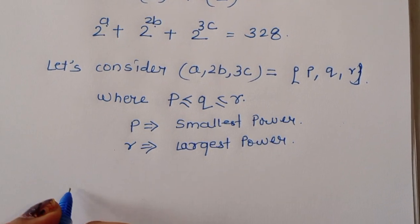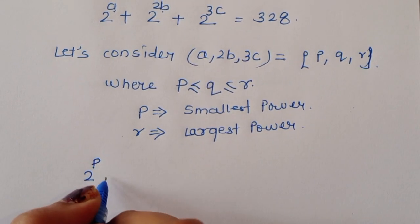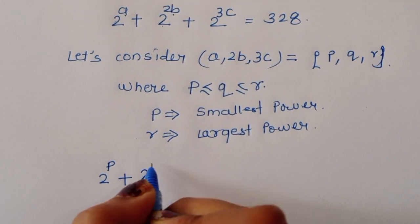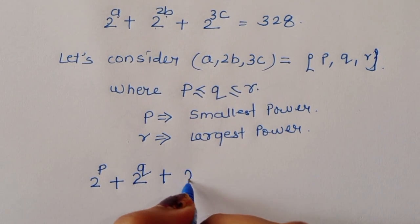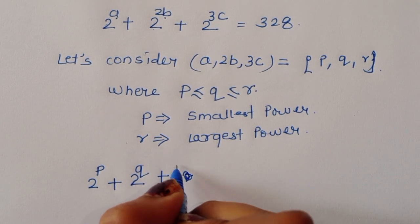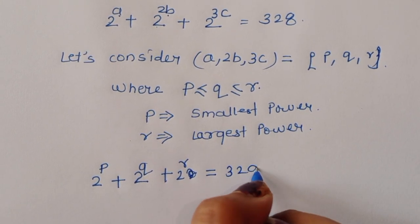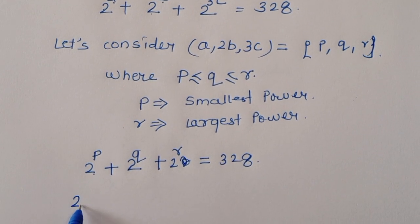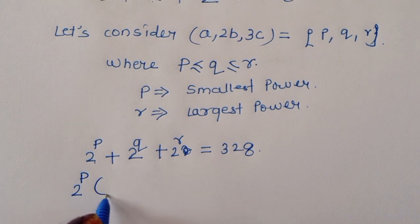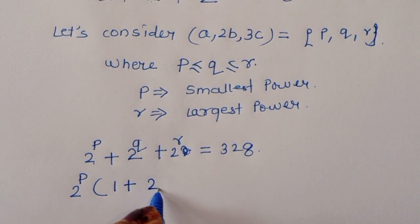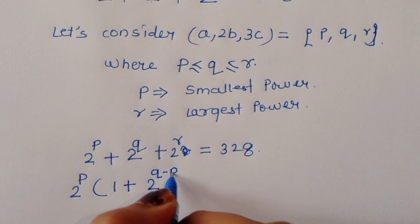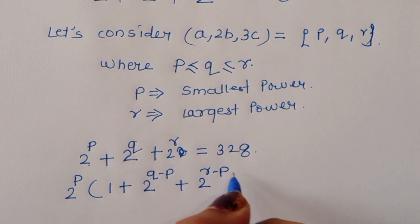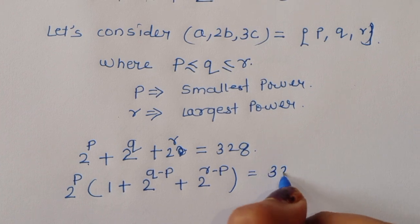So we can write 2 power P plus 2 power Q plus 2 power R is equal to 328. Taking 2 power P as common, we get: 2 power P times (1 plus 2 power Q minus P plus 2 power R minus P) is equal to 328.